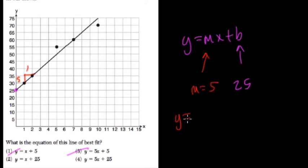m equals 5, so our equation should be y equals 5x plus 25, which is choice 4.